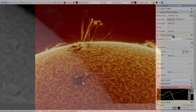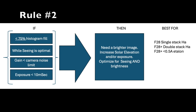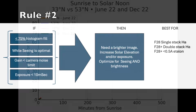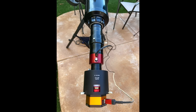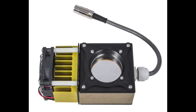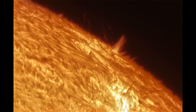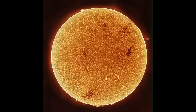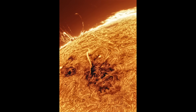Rule number two: if you can't get a 75% histogram fill with a 10-millisecond or less exposure without pushing camera gain too high while seeing is good, you must get more brightness. To gain brightness, the Sun must be higher, so consider imaging at 25 to 30% solar elevation, which might be towards or after the optimal seeing window. This applies if you're imaging in hydrogen alpha double stack at F14, or hydrogen alpha single stack at F28, or with an etalon narrower than 0.5 angstroms. Note that the 10-millisecond guideline is flexible — you can push to 15 milliseconds for a full disk or slow-moving region, but for a fast-moving active region, even 10 milliseconds could be too long.